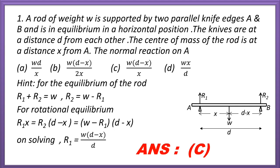For the equilibrium of the rod we can write R1 plus R2 equal to W, where R1 is the reaction at knife edge A and R2 is the reaction at knife edge B, and W is the weight of the rod acting vertically downward. The distance between two knives is D. So R1 plus R2 equal to W, and R2 equal to W minus R1.